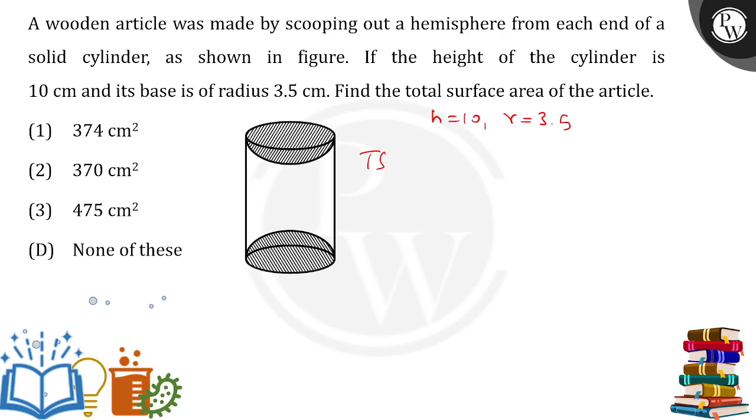Now the total surface area will be the curved surface area of the cylinder. Why am I taking curved surface area and not total surface area? Because total surface area would add the top and bottom surfaces, but those have been removed.